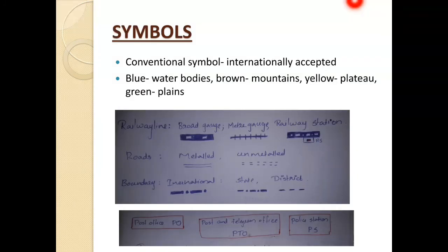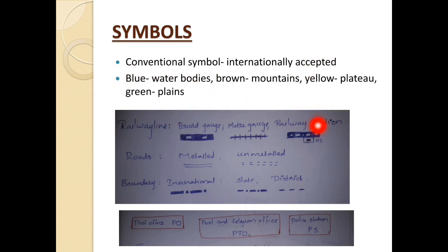The third component is symbols. Conventional symbols are symbols that are internationally accepted — they do not change with language or place. Some conventional symbols are: blue color indicates water bodies, brown color indicates mountains, yellow color indicates plateau, and green color indicates plains. For railway lines, specific symbols are used: broad gauge, meter gauge, and railway station each have their own symbol.